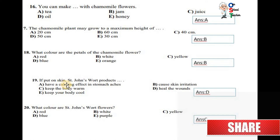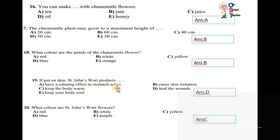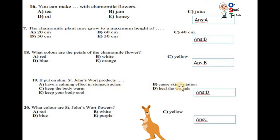If put on skin, St. John's Wort products have calming effect on stomach ache, cause skin irritation, keep the body warm, heal the bones, keep your body cool. D. What color are St. John's Wort flowers? Red, blue, white, purple, yellow. Yellow.